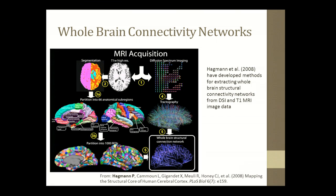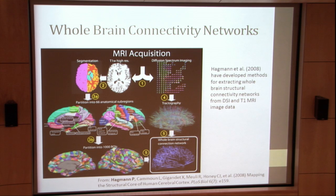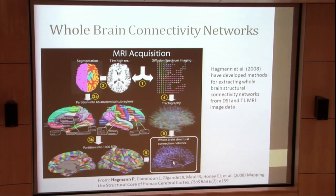I thought I'd wrap up my talk with a look at some of the brain network research done by Patrick Hagman and colleagues. What they've done is develop methods for extracting whole-brain structural connectivity networks using DSI and structural image data. Essentially their workflow is to perform structural segmentation of the image to get mappings of areas of the cortex. They parcelate the brain using FreeSurfer into 66 different anatomical areas, which is further parcelated into 1,000 anatomical regions. They then combine these regions with the tractography maps from DSI imaging, allowing them to look at how well connected each brain region is to each other brain region, getting out a brain connectivity network. This network can then be used for a number of different types of network analysis and visualization of how connected the brain is.